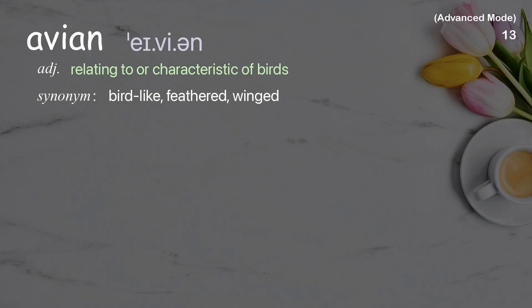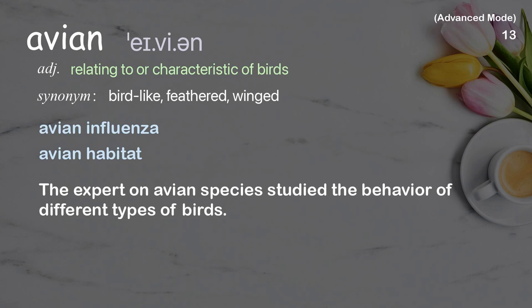Avian. Relating to or characteristic of birds. Examples: Avian Influenza. Avian Habitat. The expert on avian species studied the behavior of different types of birds.